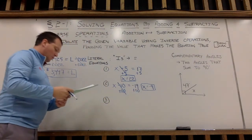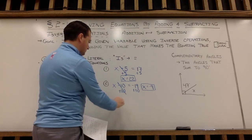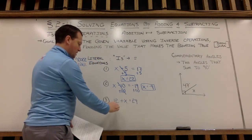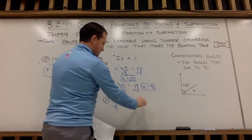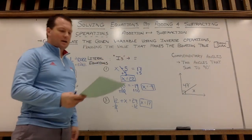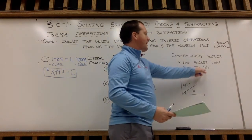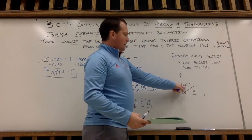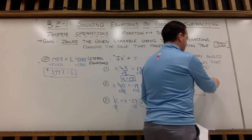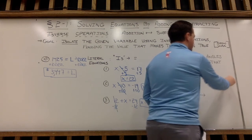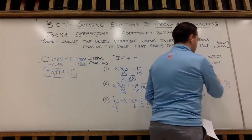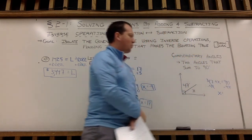And finally, example 3 here: we have the sum of 12 and a number. 12 plus a number equals 29. To get x alone, we'll undo the positive 12 with subtracting 12 from both sides. 29 minus 12 is 17. It's a beautiful thing. Last review here: complementary angles are two angles that sum or add up to 90 degrees. So if I have two angles — 47 and x — and I want to find the value of the missing angle, the first angle plus the second angle, 47 plus x, has to add up to 90. So I could find that missing angle by subtracting 47 from both sides. 90 minus 47 will give us 43.